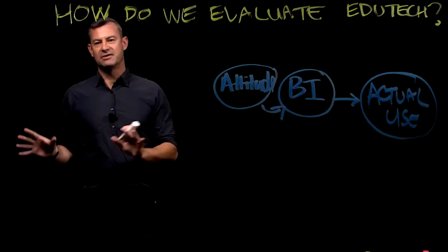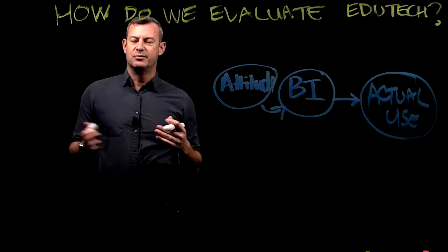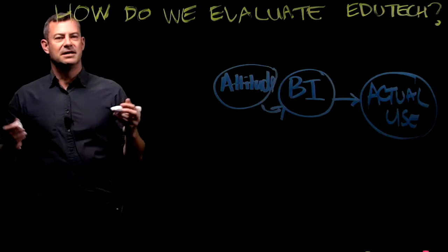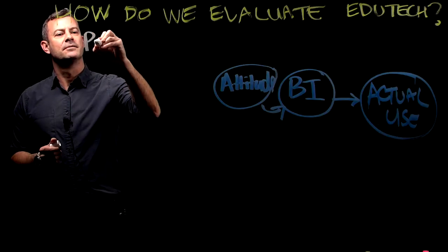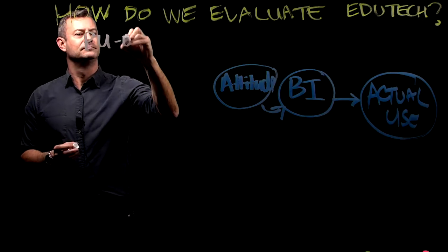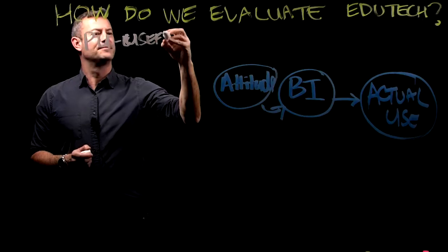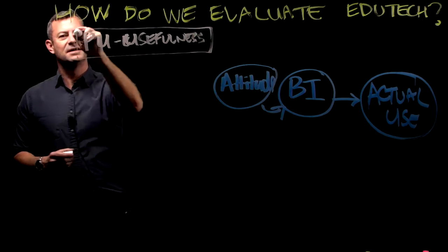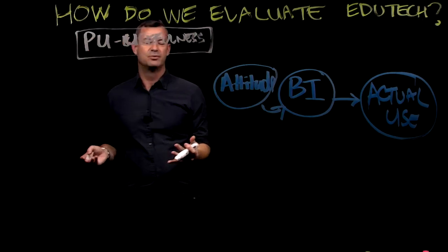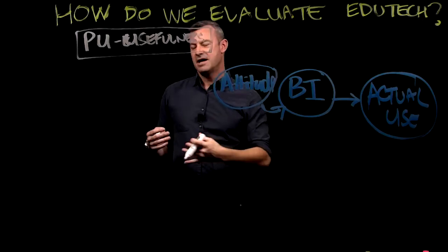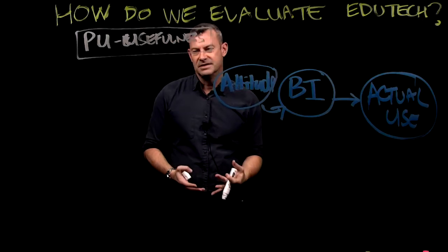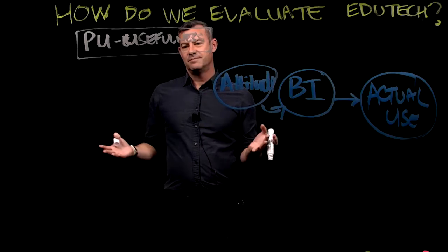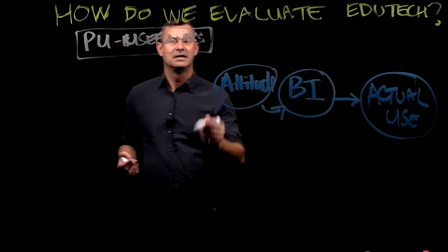What feeds into attitude? That's the million dollar question and the subject of technology acceptance modelling. There are two competing kinds, but generally the biggest factor people measure is usefulness — whether or not someone perceives that technology is useful for what they want to do, for example calculating something, accessing a record, accessing a quiz, loading a document, or having a discussion. Is the technology going to do that? If it's not, then no one's going to want to use it.